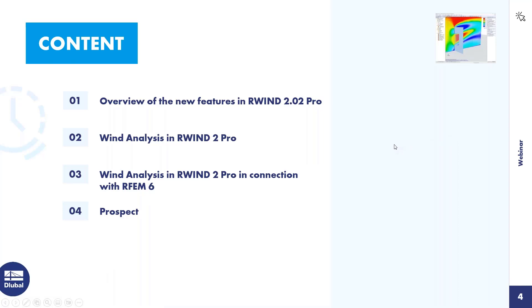Regarding today's agenda: first, Stefan will give an overview of the new features in RWIND 2.02 Pro. Then he will do a wind analysis in RWIND Pro without using RFEM6, followed by a wind analysis in RWIND Pro in connection with RFEM6. Finally, he will give a prospect of what is scheduled to be integrated into RWIND in the future.